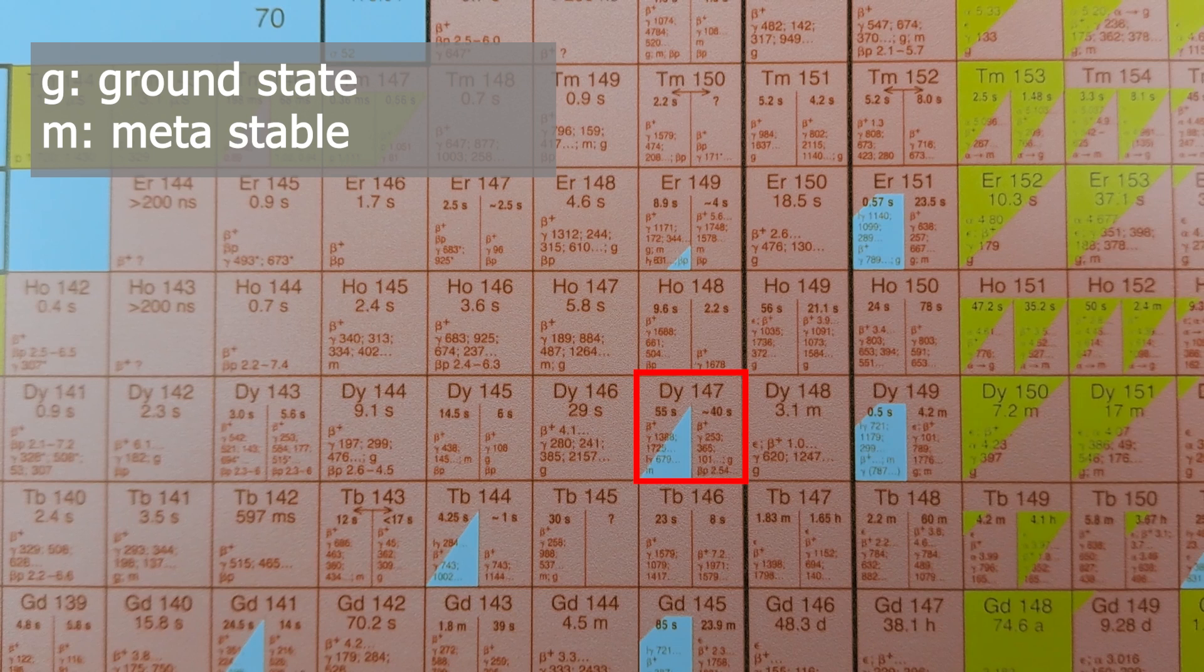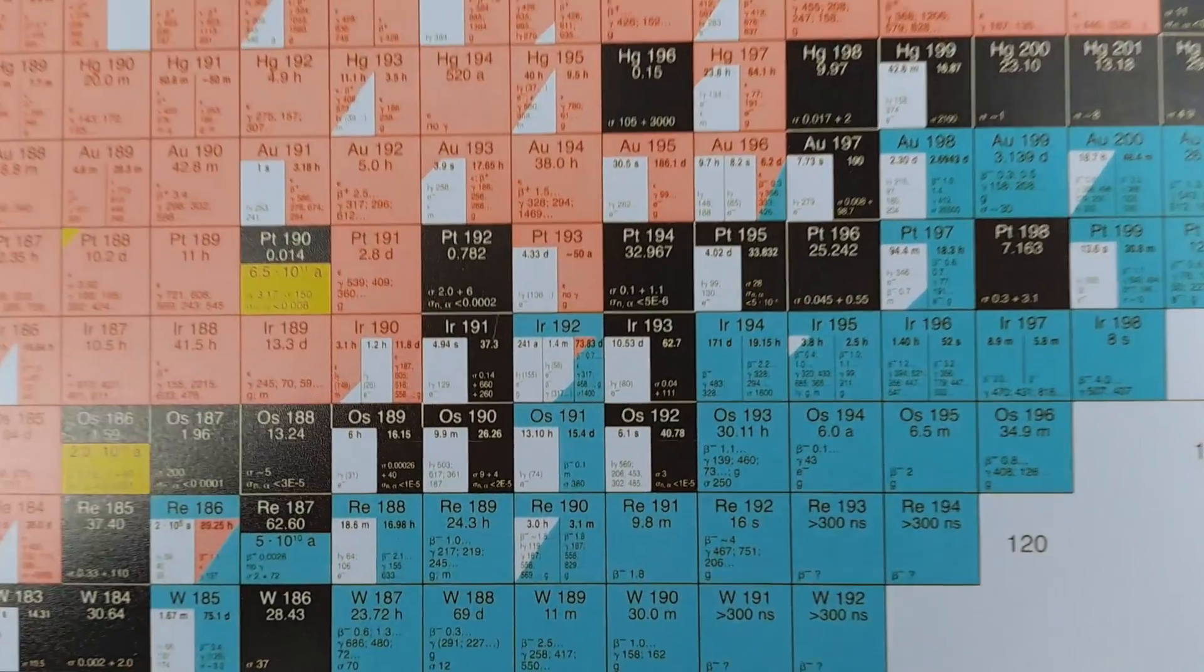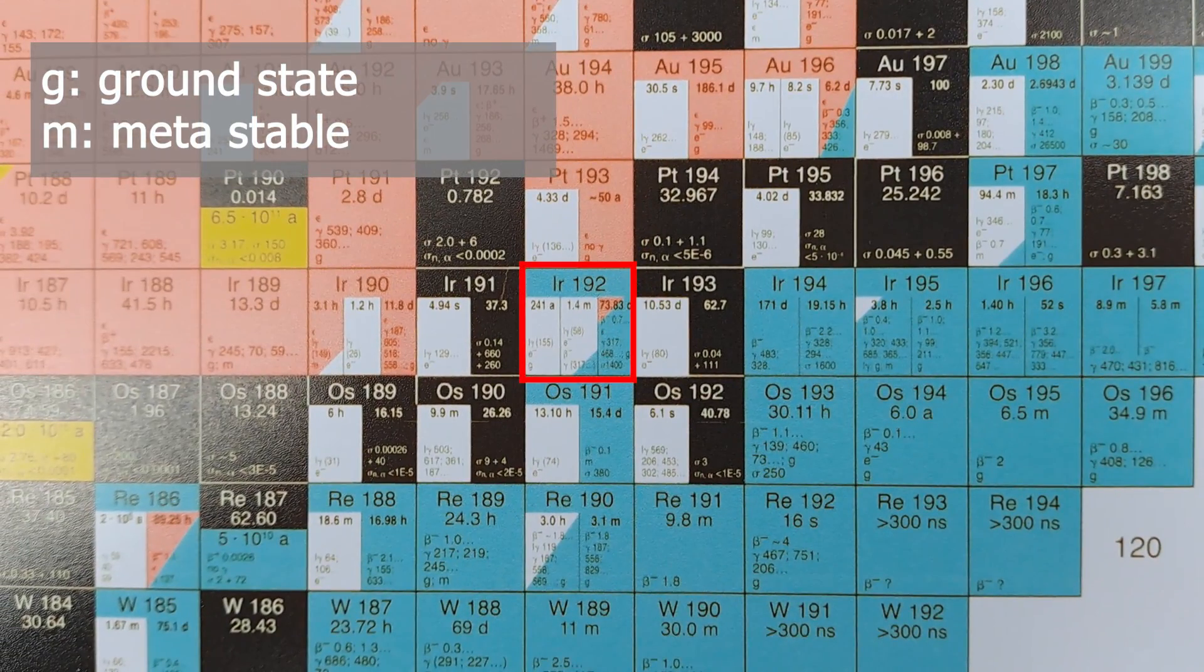Dysprosium-147M can then either decay via isomeric transition to Dysprosium-147G or directly through beta plus decay into Terbium-147M. However, it doesn't decay into Terbium-147G. This M and G distinction applies not only for beta plus, but also to isomeric transitions.